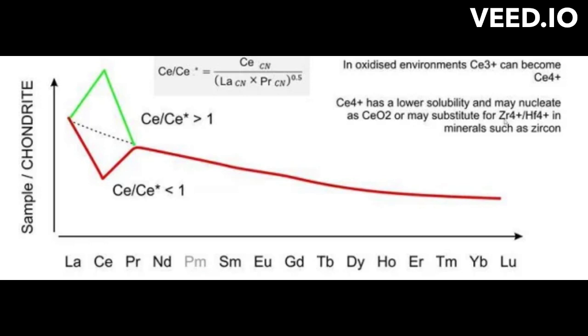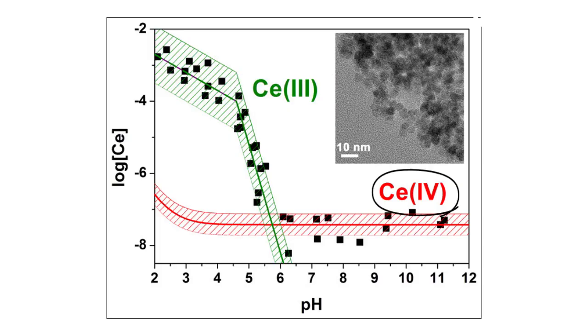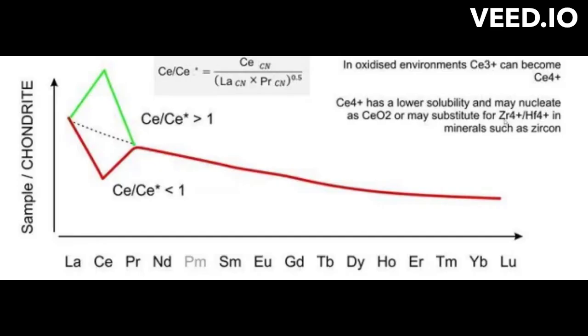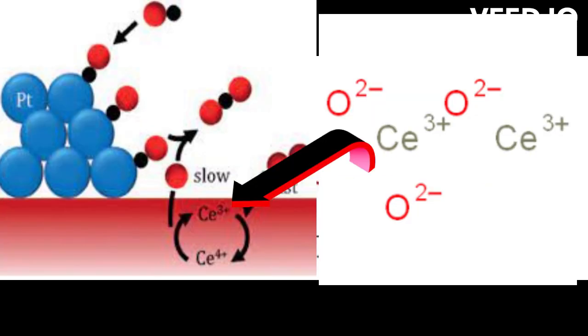Cerium is a rare earth element, a lanthanide, characterized by two different redox states: Ce3+ and Ce4+, contrary to other lanthanide elements which are only trivalent with the notable exception of europium 2+. Cerium 3+ can be oxidized by atmospheric oxygen to cerium 4+ under oxidized environments or nearly alkaline conditions.